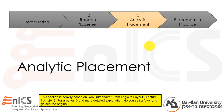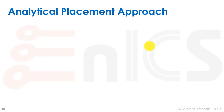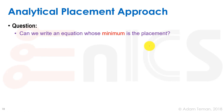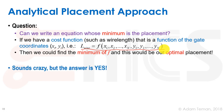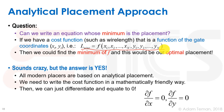Now we discuss analytic placement, which is how modern placers work. The question is: can we write an equation whose minimum is the optimal placement? If we have a cost function — such as wire length — that is a function of gate coordinates (xi, yi), then we can write total wire length as a function of all x's and y's. Finding the minimum of that function gives our optimal placement. All modern placers are based on analytic placement, writing the cost function in a mathematically friendly way.